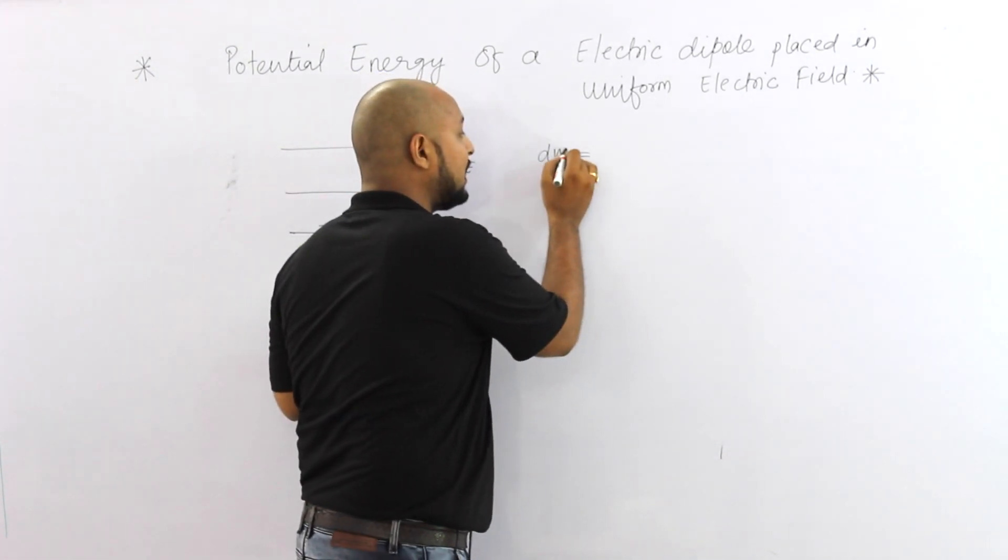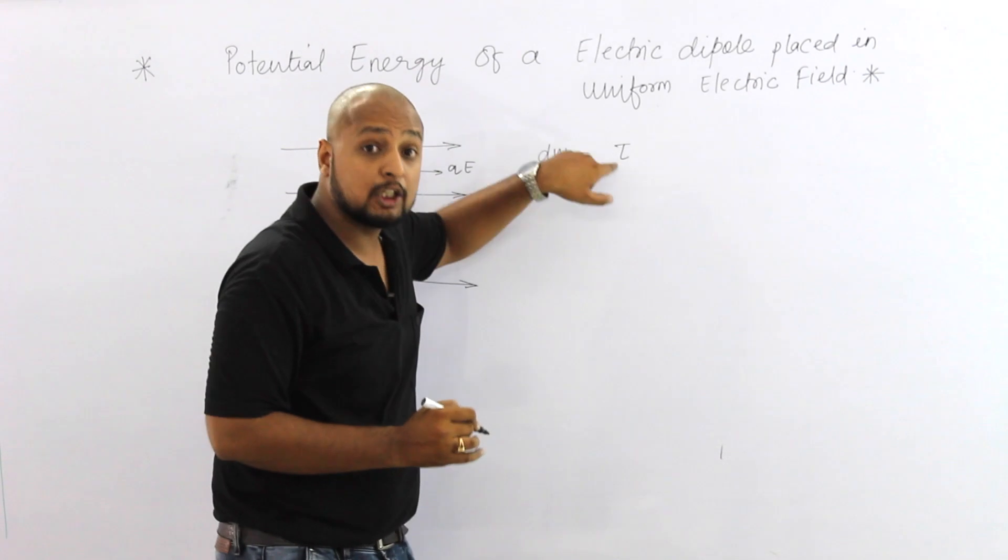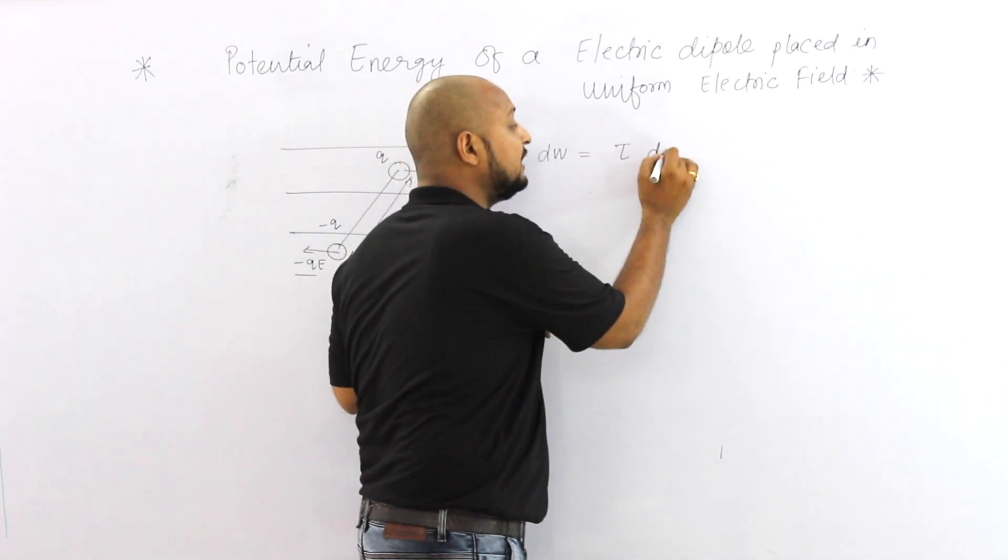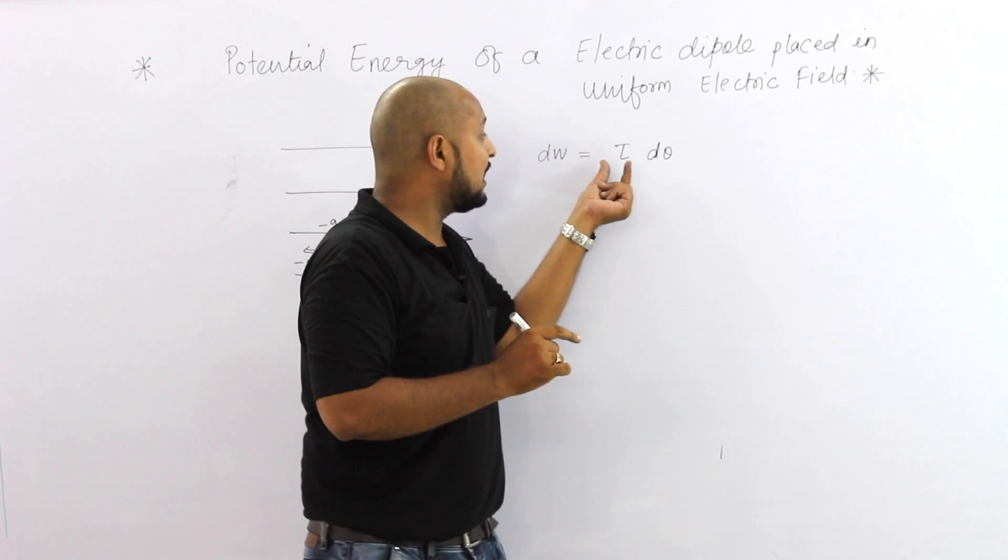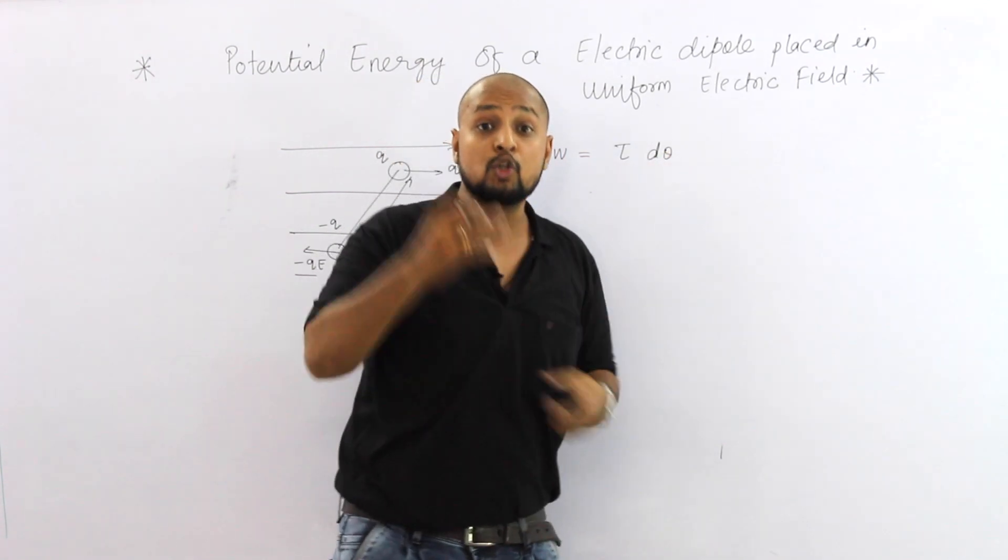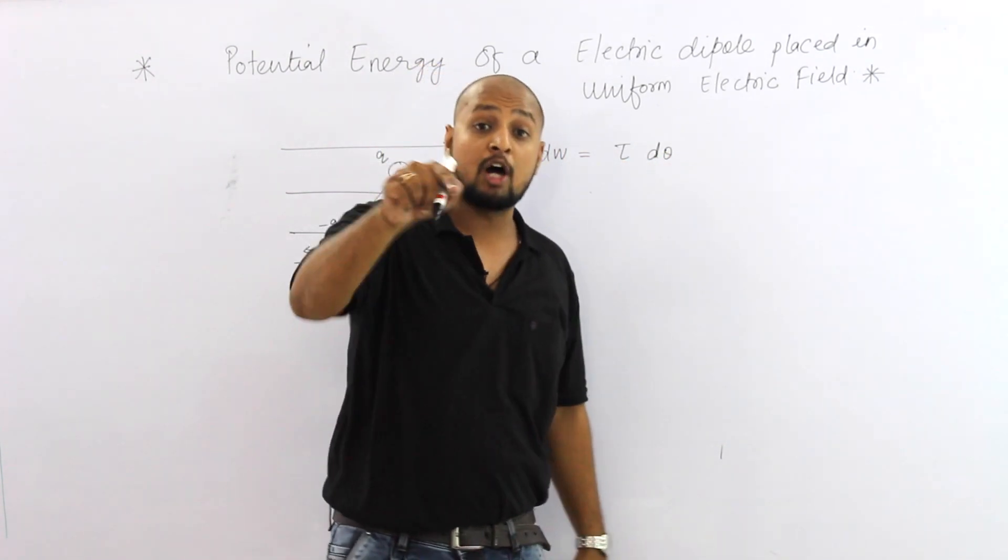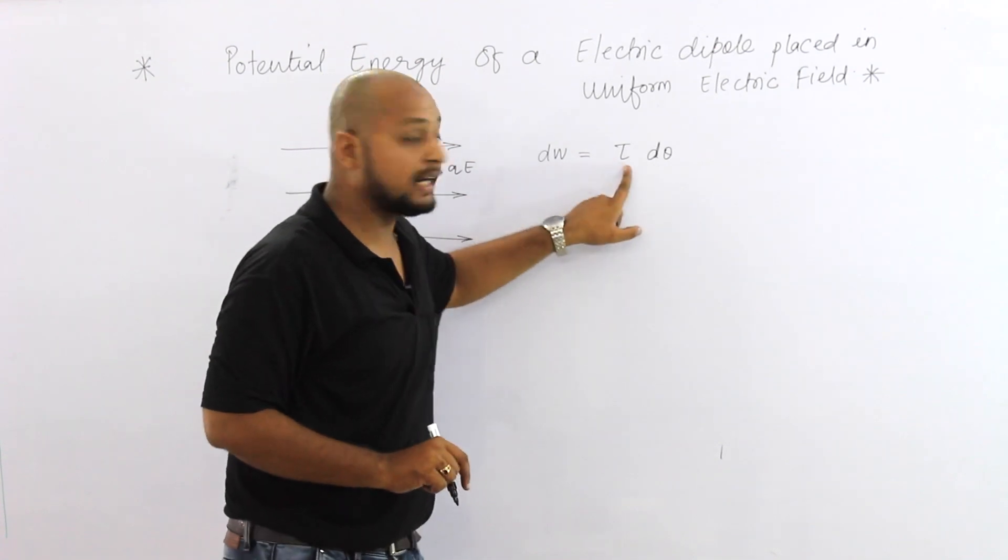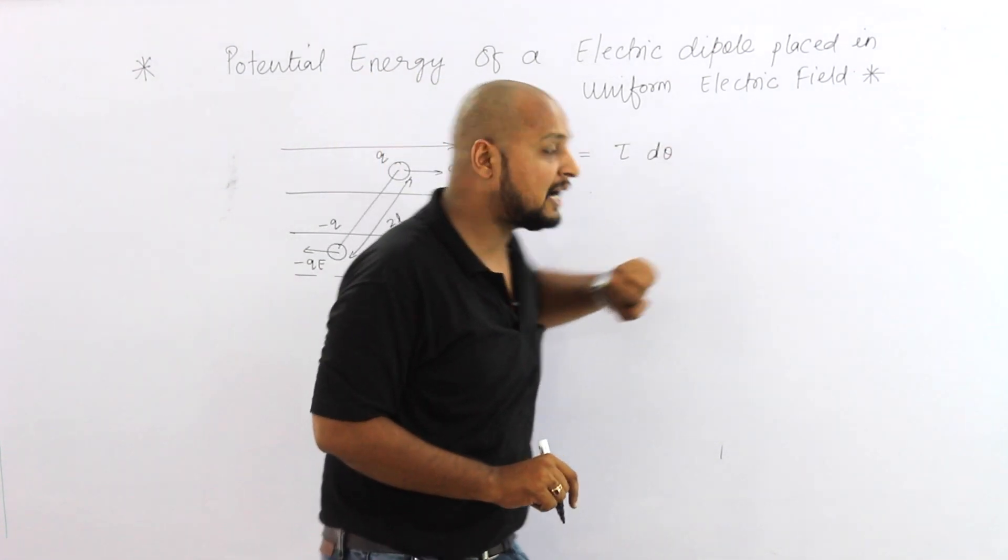So work done formula, instead of force, here it is torque tau d theta. Like force into displacement, here it is torque into displacement. Work done equals tau d theta because torque is variable.